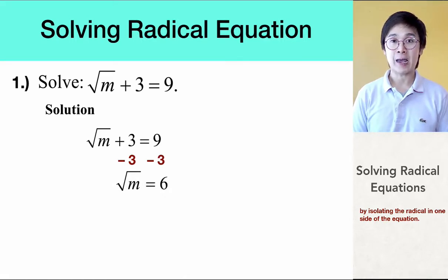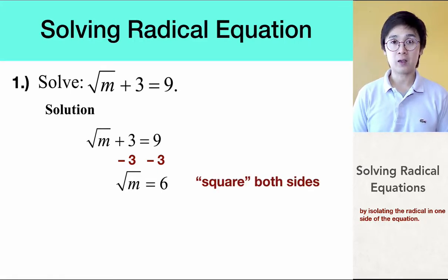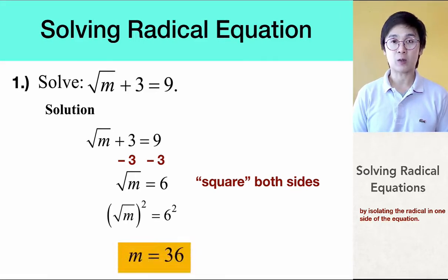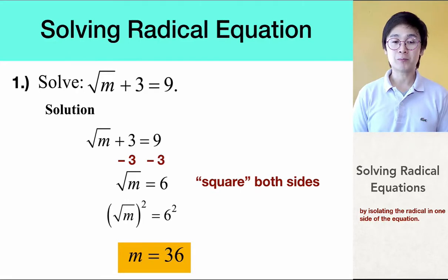And since m is still not by itself because we still have to get rid of the square root, we're going to square both sides. By doing so, we're undoing the square root symbol because square root and square cancel each other out. We are now left with m is equal to 6 squared, which is equal to m equal to 36. So, this is basically how we solve a radical equation.